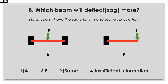Which beam will deflect more? Beam A has two fixed supports and a point load P at the middle, and beam B is a cantilever with point load P at the end. The two beams have the same length and section properties, so the cantilever with the point load at the end will deflect more.